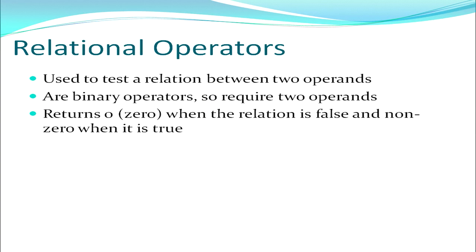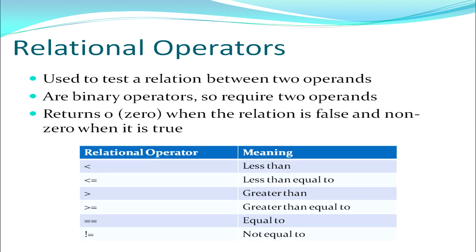Next we move on to relational operators. A relational operator is used to test a relation between two operands. Since it is comparing two operands it is a binary operator. It returns zero if the relation being tested is false, and returns a non-zero value when it is true. The various relational operators are: less than, less than or equal to, greater than, greater than or equal to, equal to (==), and not equal to.